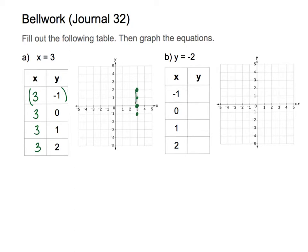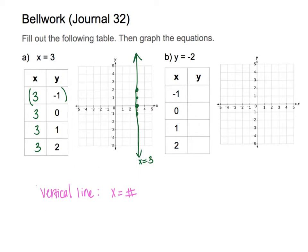If you were to connect the dots, this sure looks like a vertical line — and it is. When x equals some number and you graph it, it's a vertical line. So as a note: vertical lines occur when you have an equation where x equals some sort of number, with no y's involved, just x.